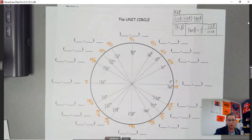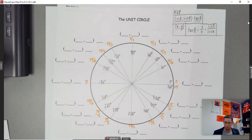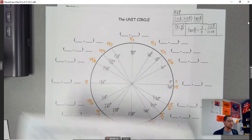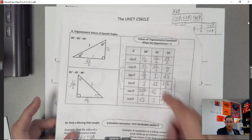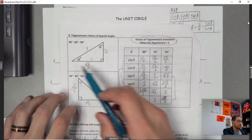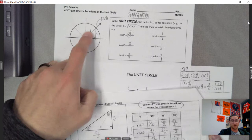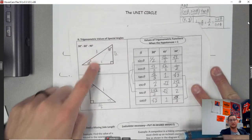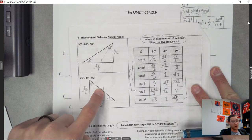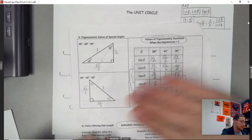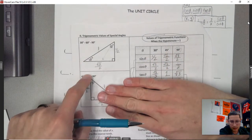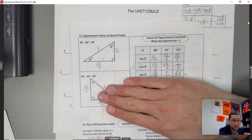We've actually done some of this before. To rewind back to a lesson last semester, we filled out a table where we set up 30-60-90 triangles with the hypotenuse equal to one — that's why we did that activity. Same thing with 45-45-90 triangles where the hypotenuse was one. We got all these values in a table, and now they're going to come into play as we find values on the unit circle.